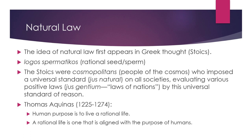Thomas proposed that the human purpose is to live a rational life, and a rational life is one that is aligned with the purposes of humans — what humans were designed for. Some of the differences between Thomas and the Greeks would be the conception of reality and the conception of divinity. For Thomas, being a medieval Christian versus a Greek, you would have different conceptions of God.